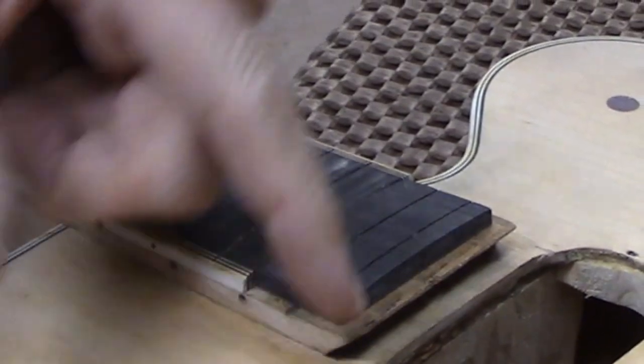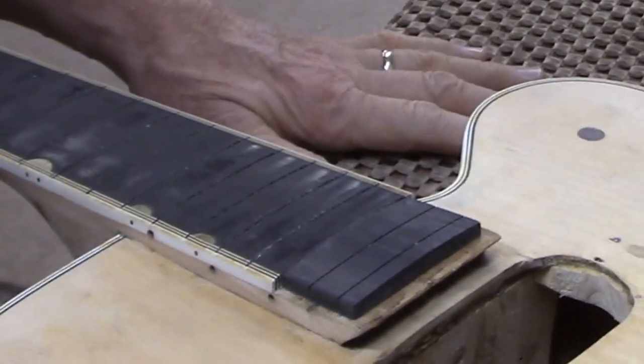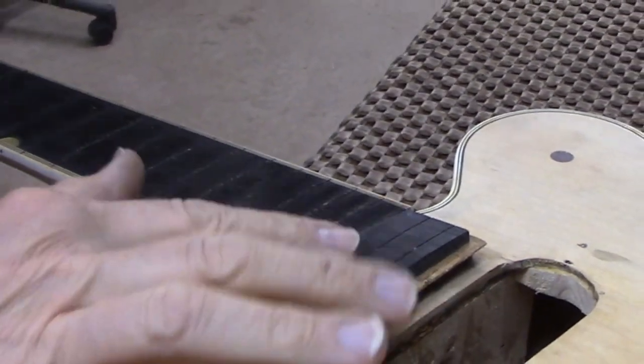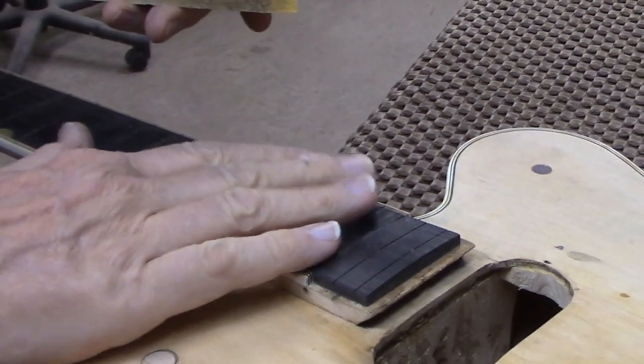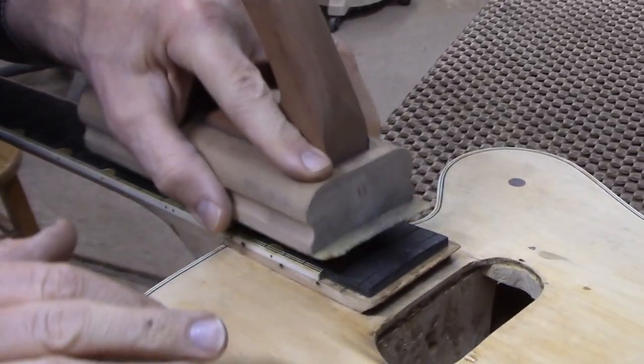We have to finish putting the binding around this replacement part of the fretboard. Before that, I'm just going to sand it so that it's curved to the same 12 inch radius as the rest of the fretboard.